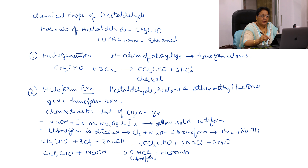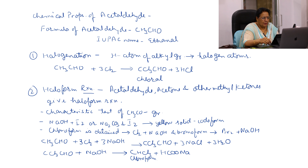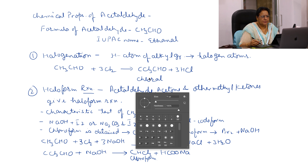One important chemical property of acetaldehyde is halogenation. In halogenation, H atoms of the alkyl group are replaced by halogen atoms. One important thing is that formaldehyde does not give this reaction. Acetaldehyde CH3CHO reacts with Cl2 to give CCl3CHO plus 3HCl — the H atoms of the alkyl group are replaced by 3 Cl atoms. Its name is chloral.